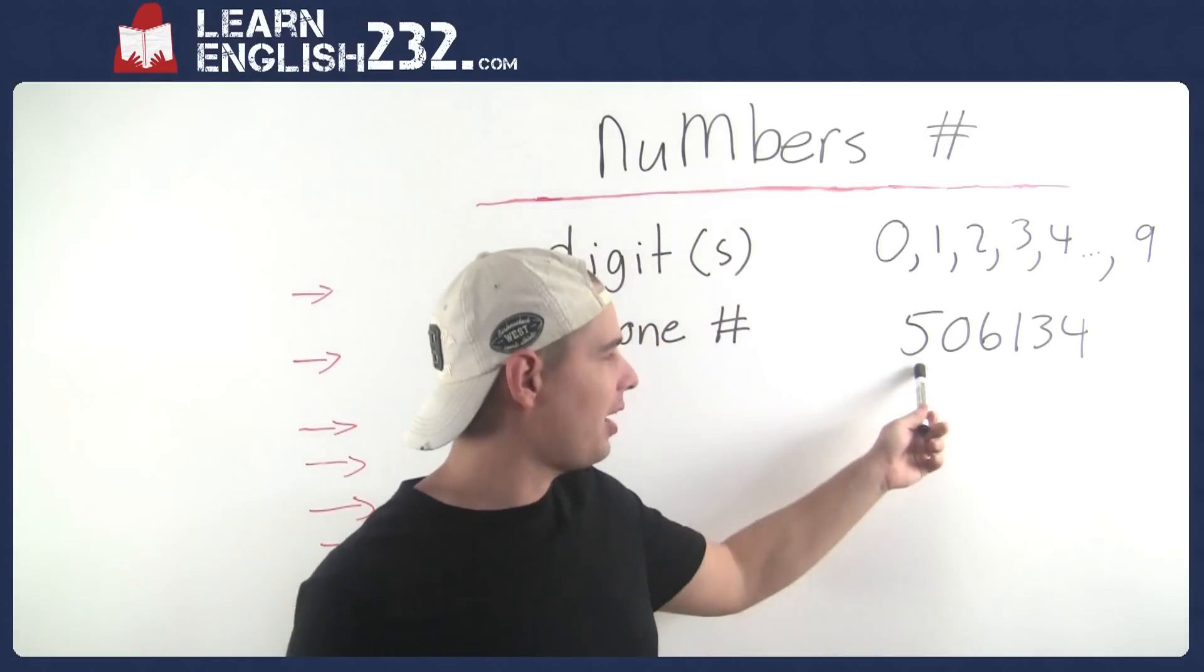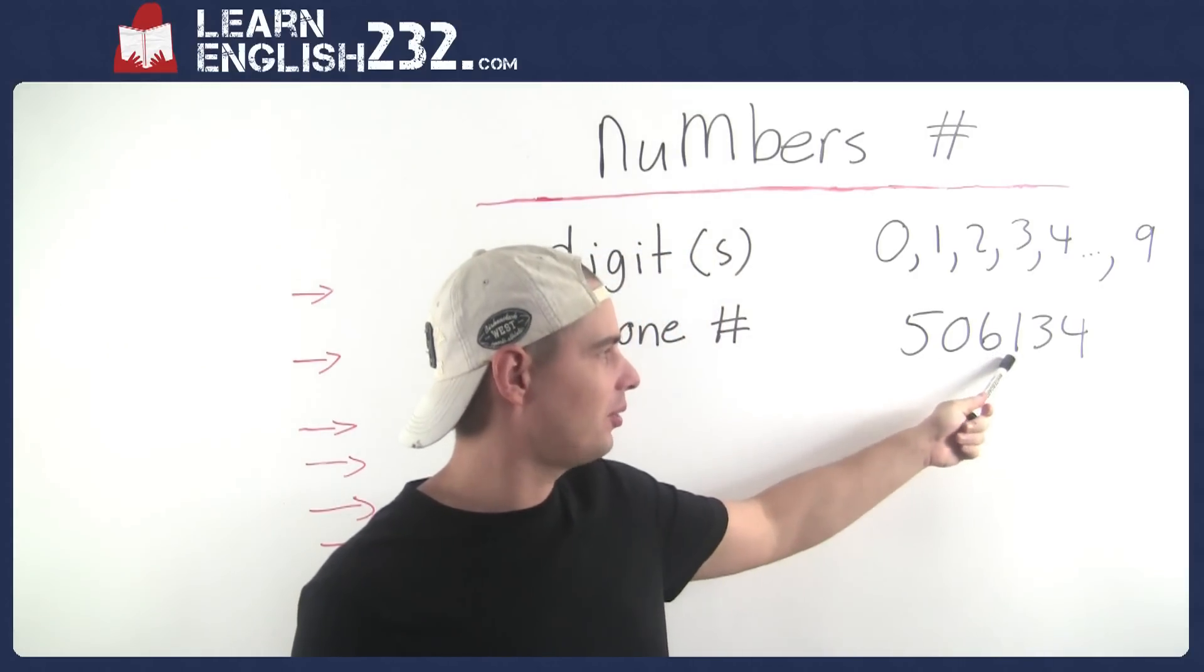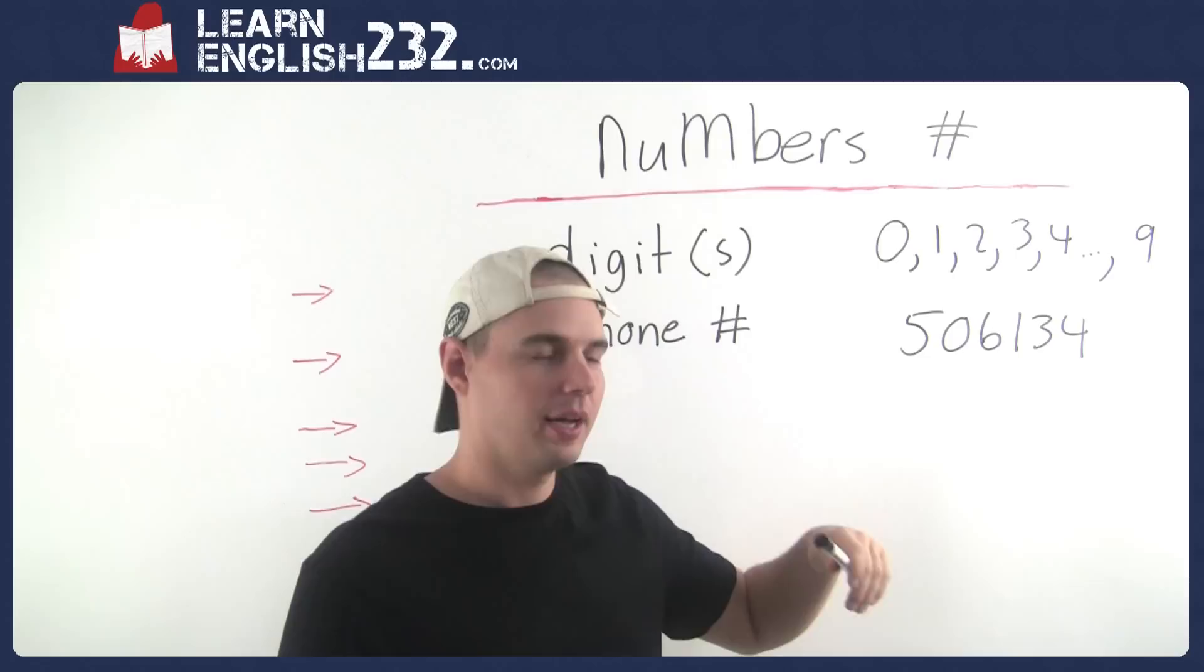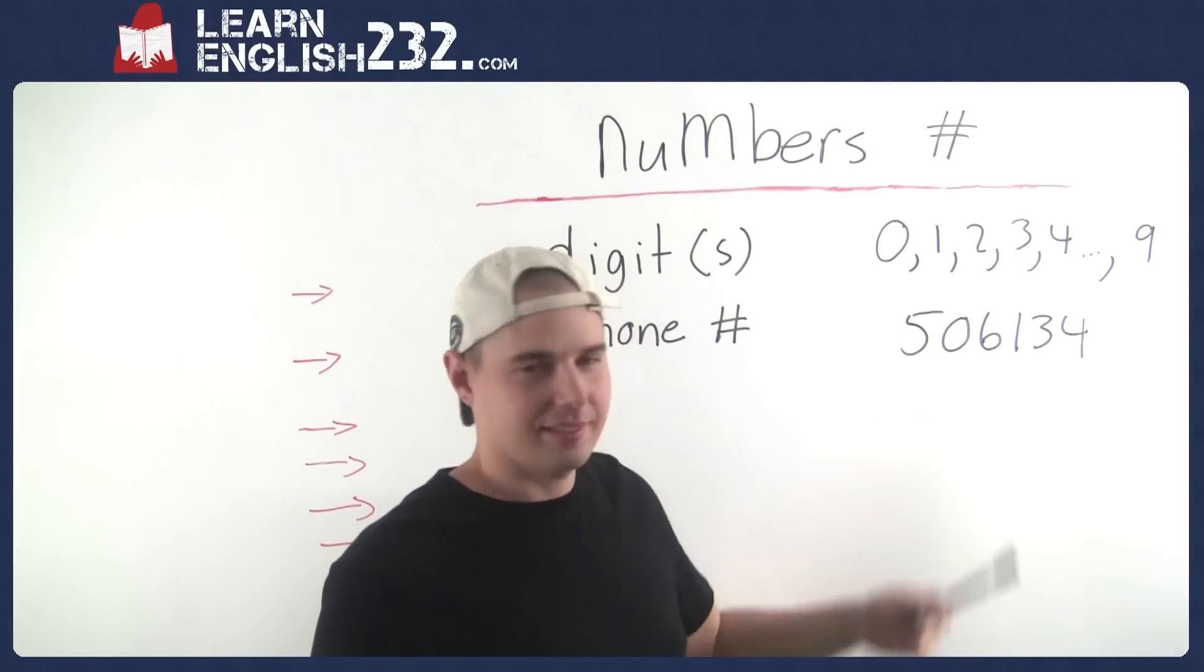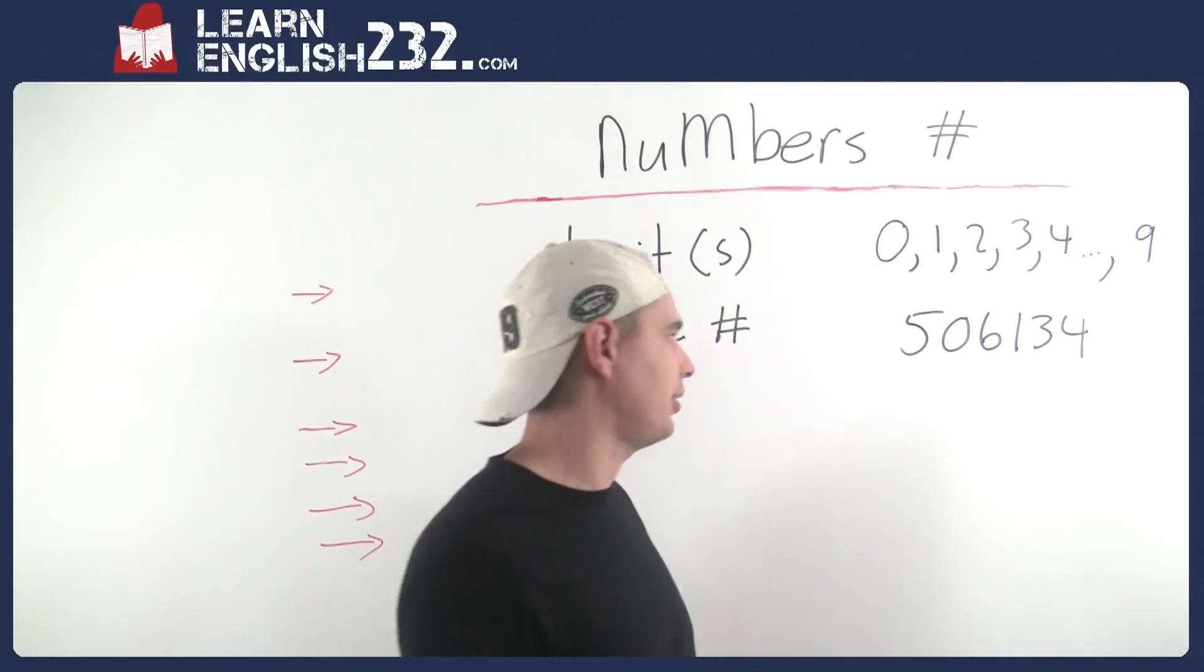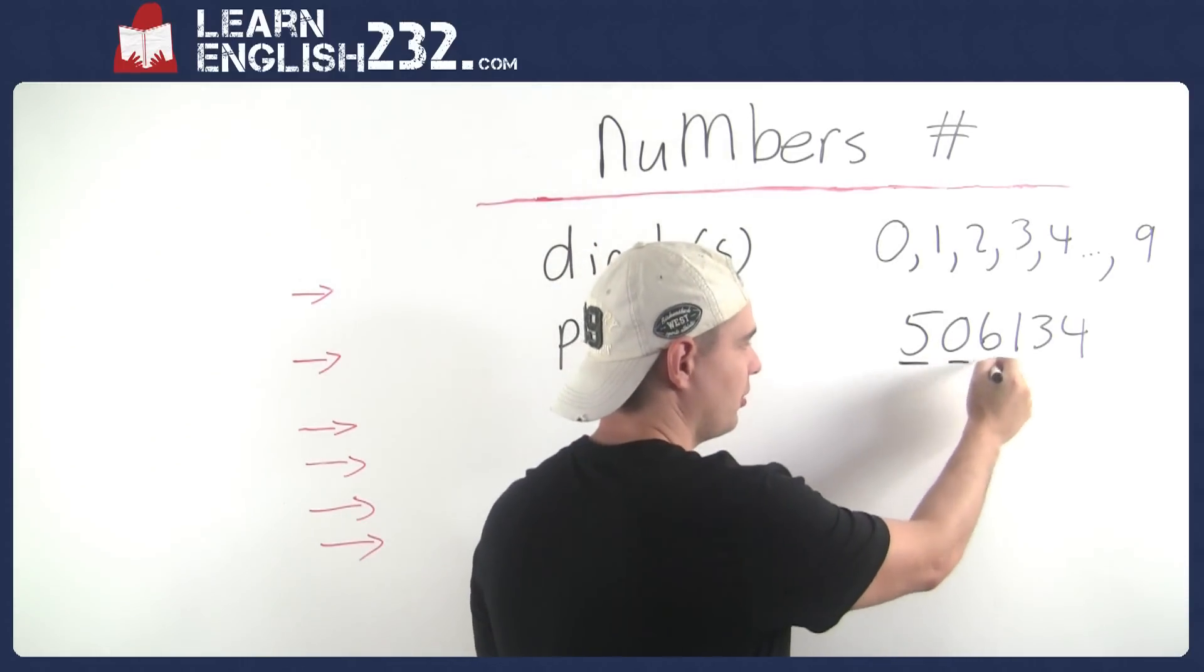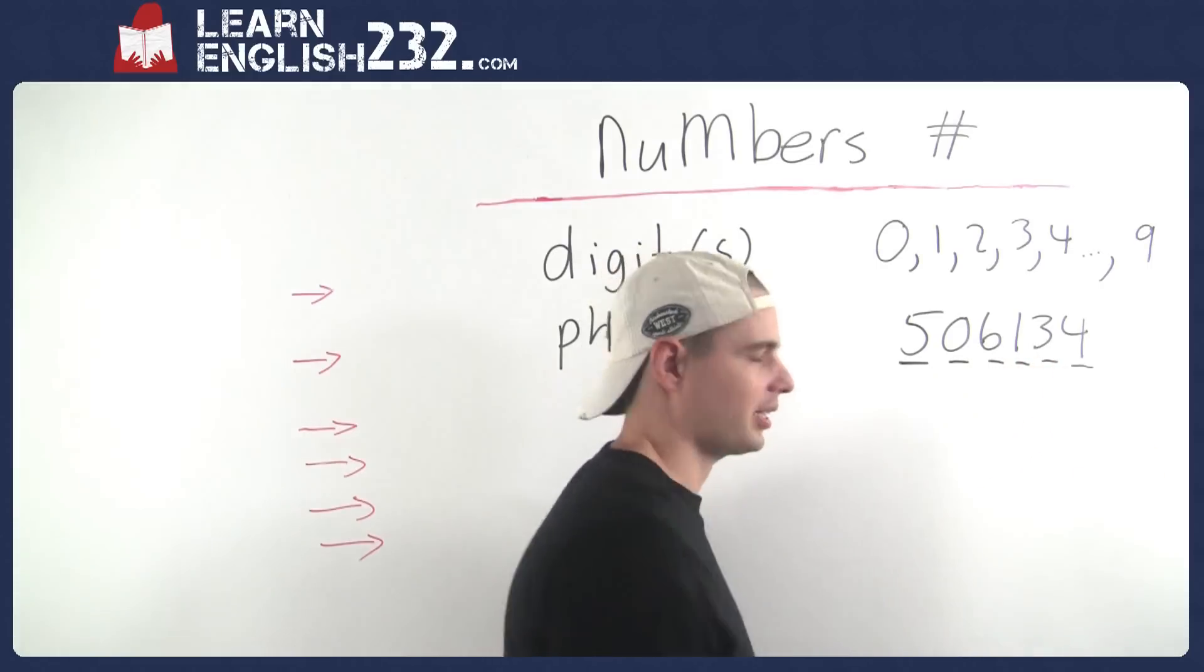So the number 506,134, that is a six-digit number. How do I know that? I just count them: one, two, three, four, five, six. There's six of them. There's six digits.